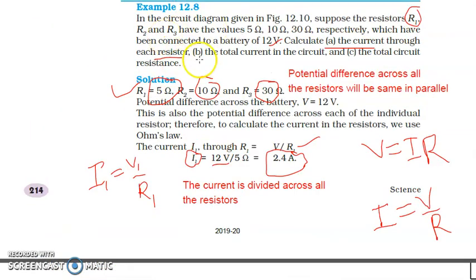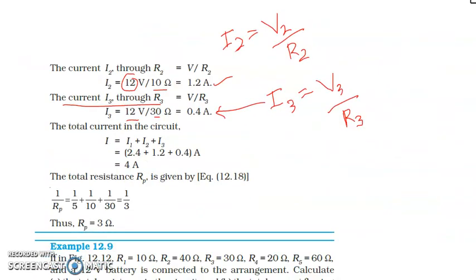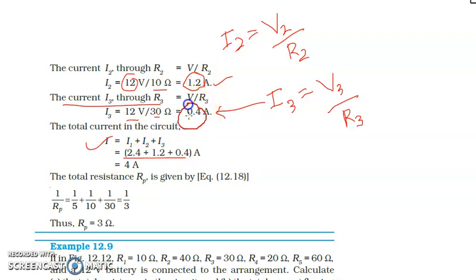Now for the second part — the total current in the circuit. We have already calculated the current through each resistor. We simply add them: I = I1 + I2 + I3 = 2.4 + 1.2 + 0.4 = 4 ampere. That is the total current flowing through the circuit.